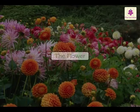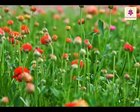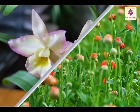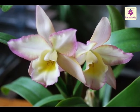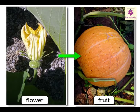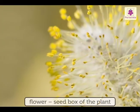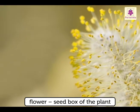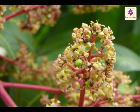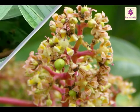The flower is the most attractive and colorful part of the plant. Flowers which do not have bright colors often have a pleasant smell. Most flowers grow into fruits, and the fruits have seeds inside them. Hence, a flower is actually the seed box of the plant. Let us see how the flower turns into a fruit.